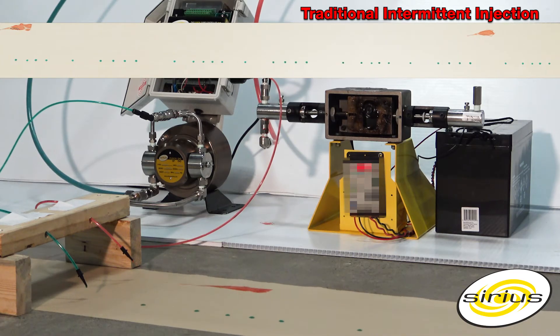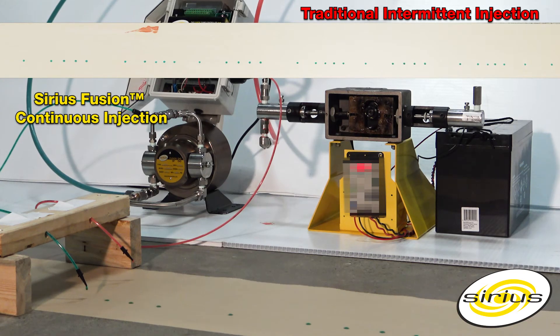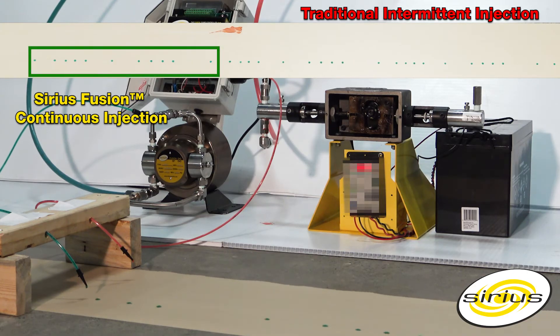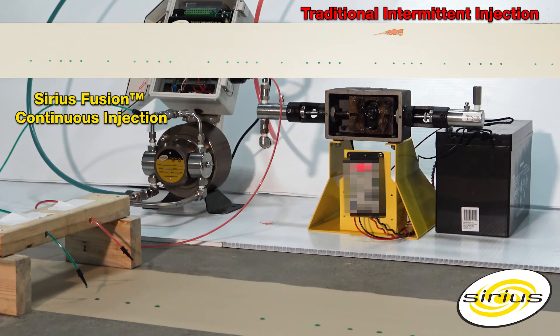On the left injecting green dye is a Sirius Fusion pump set to 10 quarts per day. The dots provide a visual representation of the accuracy and repeatability of the Sirius continuous injection pump.